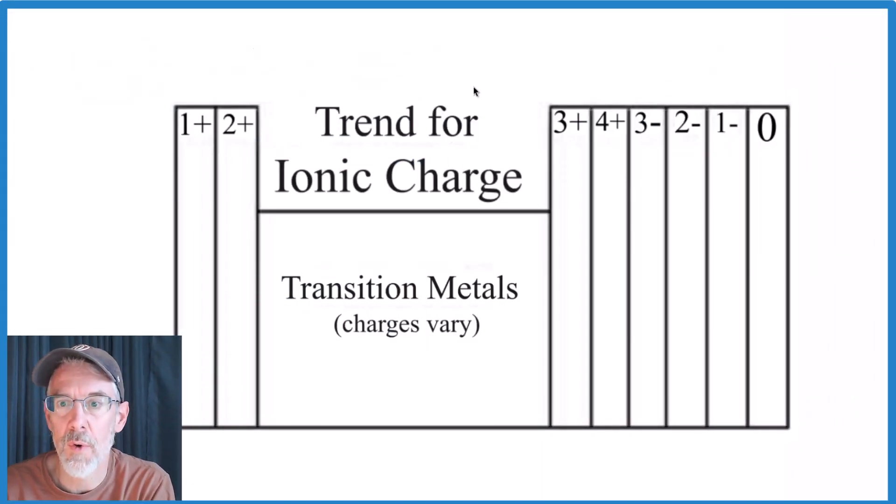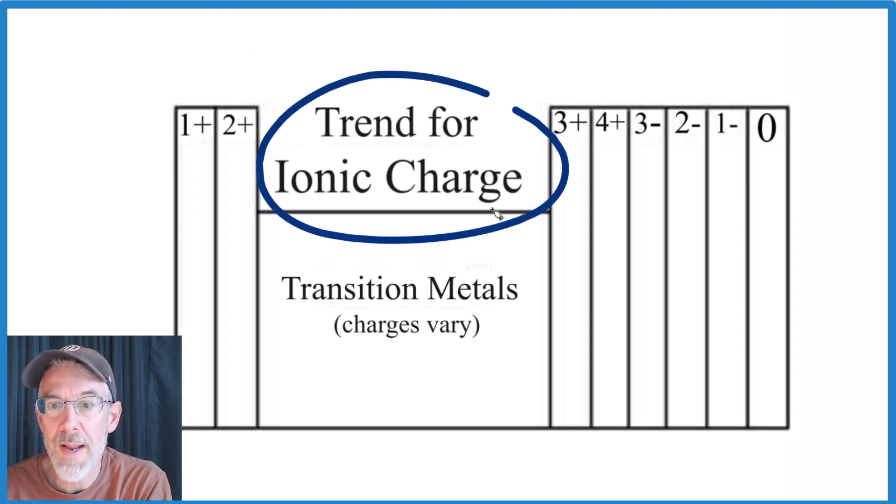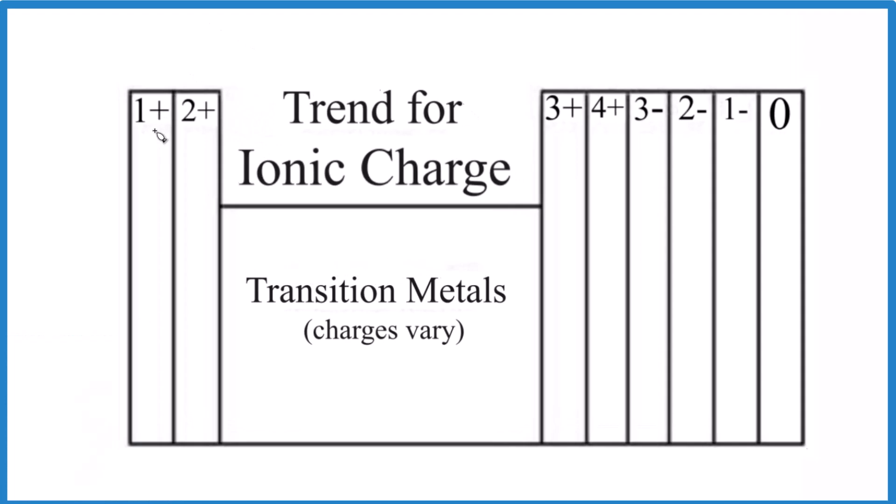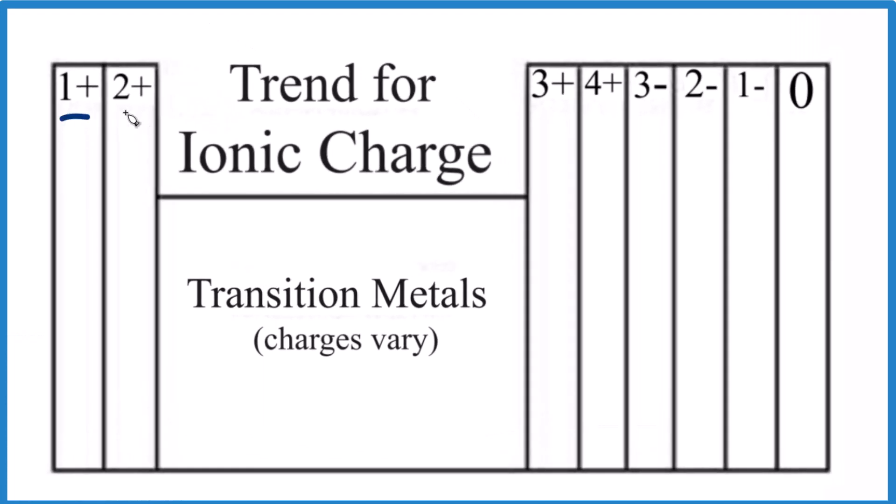The key is you really need to know the trend for ionic charge. If you look at group one, elements in group one are one plus. Group two is two plus. We skip the transition metals—they are positive, but their charges vary. Three plus, four plus, sometimes you'll see four minus here. Then we go down: three minus, two minus, one minus, and the noble gases are zero. If you know this trend, it gets a lot easier to name ionic compounds.